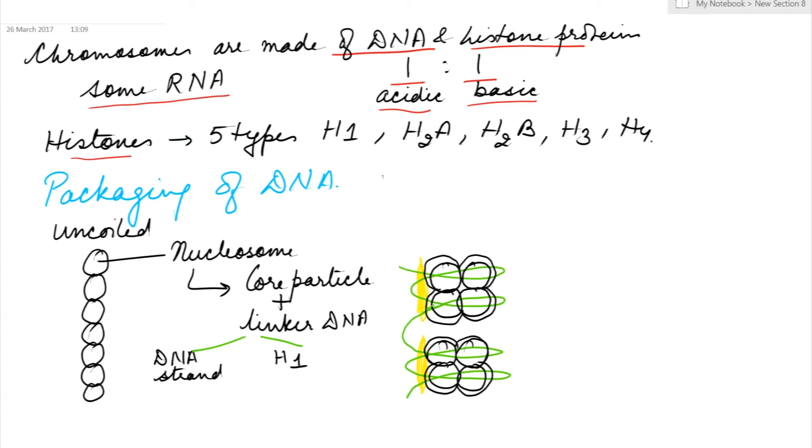The histone proteins are of five types: H1, H2A, H2B, H3, and H4.